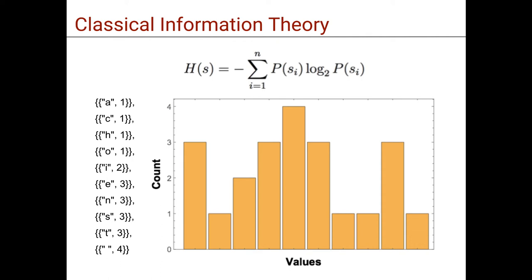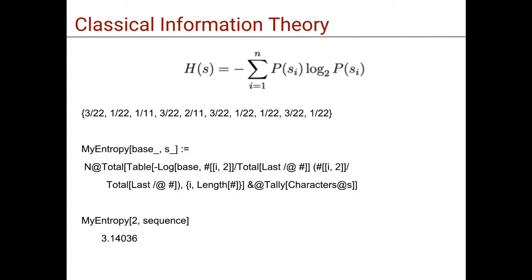Then for every symbol S(i), in this case a letter, we can calculate each probability of occurrence in the sentence, to finally multiply by the logarithm of the probabilities and take the sum over all the elements.